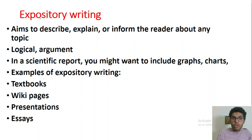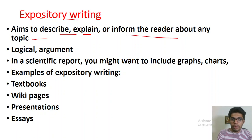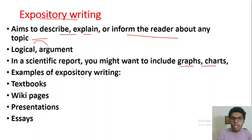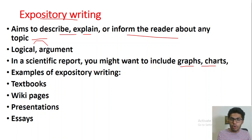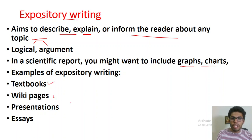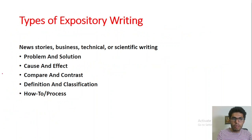The last mode of writing is expository writing. Expository writing aims to describe, explain, or inform the reader about any topic. Arguments are developed and presented logically. In a scientific report you might want to include graphs, charts, columns, rows, and pictures. All of this information is basically there to expose the reader to a concept or idea. Examples of expository writing are textbooks, wiki pages, presentations, and essays.